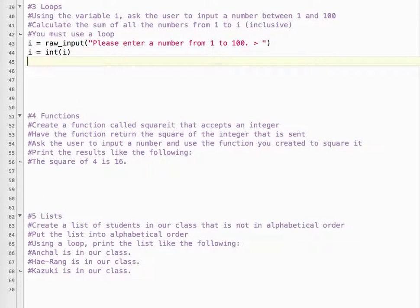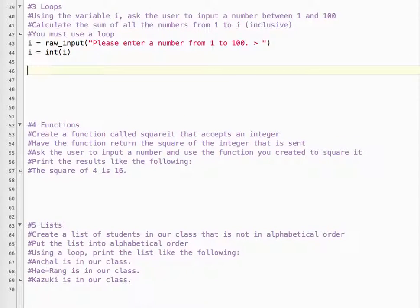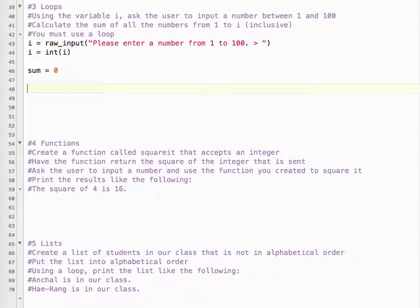So, we want to find out the sum. When we start, we don't know the sum. So the sum equals 0. And then we need to make a loop.